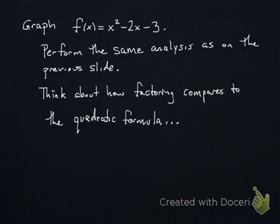Now it's your turn to show off your knowledge. With this quadratic function here, x squared minus 2x minus 3. I want you to find the vertex, the y-intercept, the x-intercepts. Whether or not it opens up or down, I want you to graph it. Think about how the quadratic formula compares to the factoring.